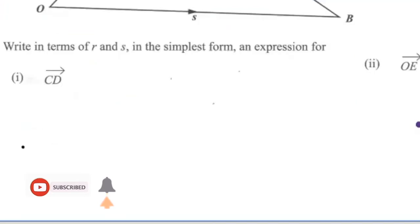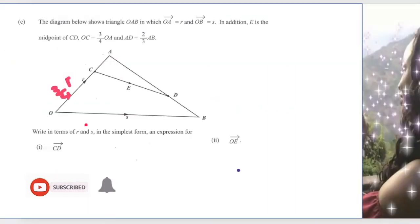This question asks to write in terms of R and S in the simplest form an expression for CD and OE. Now for us to find CD we need AD and AD relies on AB. So first I have to find what is AB before I can establish what is AD.